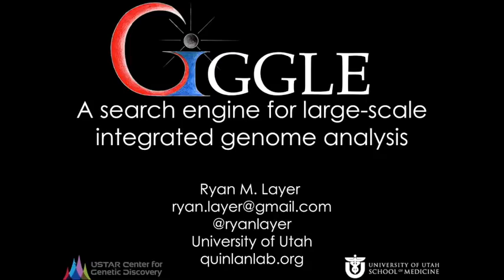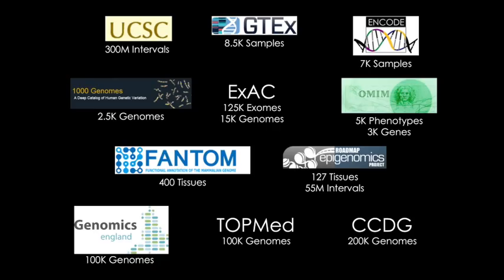There is a tremendous amount of genomic information available to us, from deep catalogs of genetic variants to expression and regulatory data collected across hundreds of tissues and thousands of samples. In principle, this data can be used to find new connections between genomic elements and put new experimental results into a broader context. But in practice, this is difficult because data is spread across many different repositories, each having their own interfaces and their own organization. So you really need to know exactly what you're looking for and exactly where to find it. This is reminiscent of the early days of the internet before search fundamentally transformed the way we interact with the web.